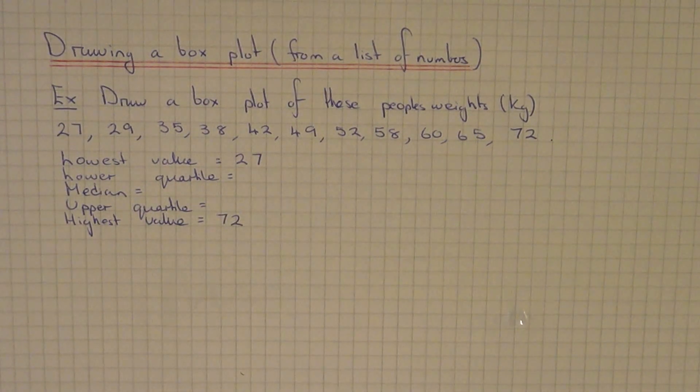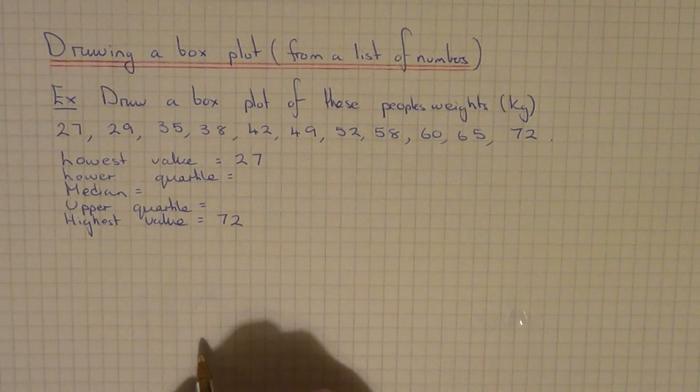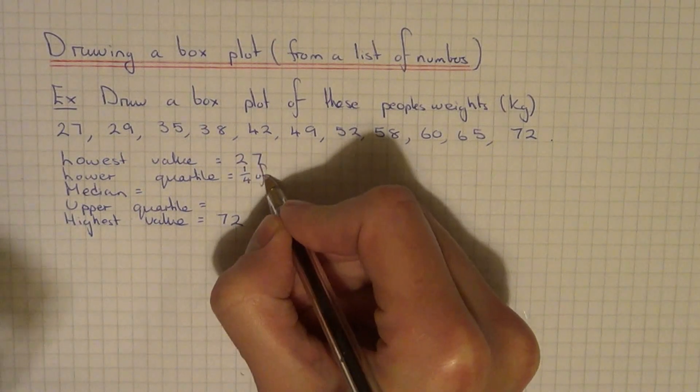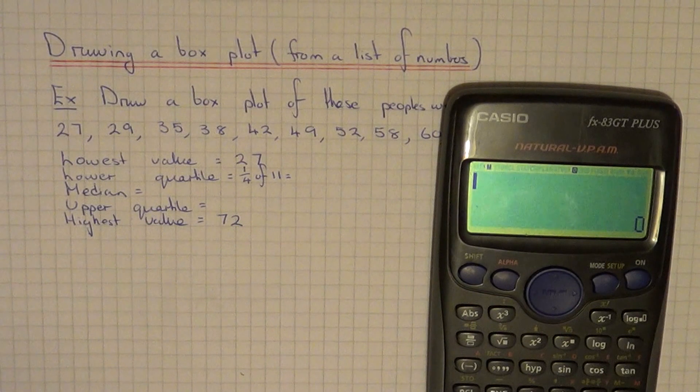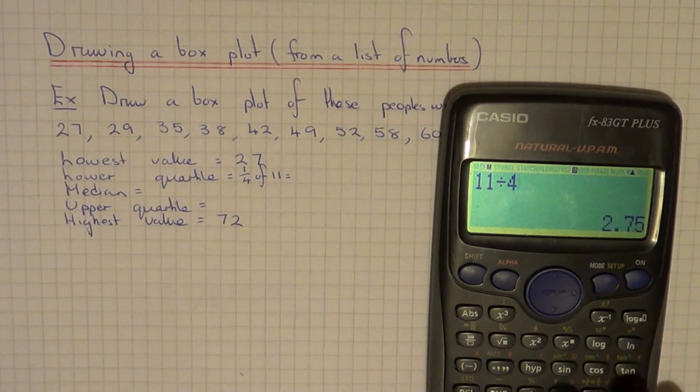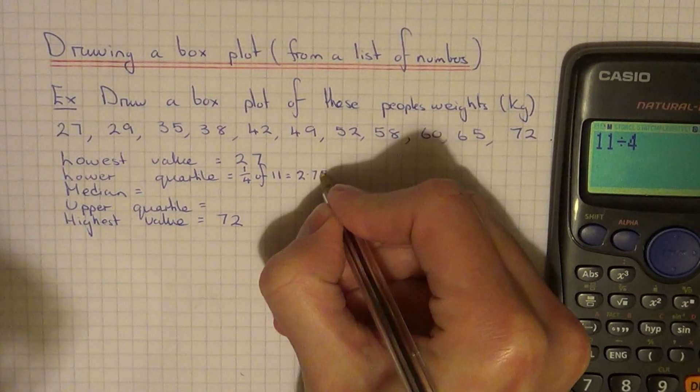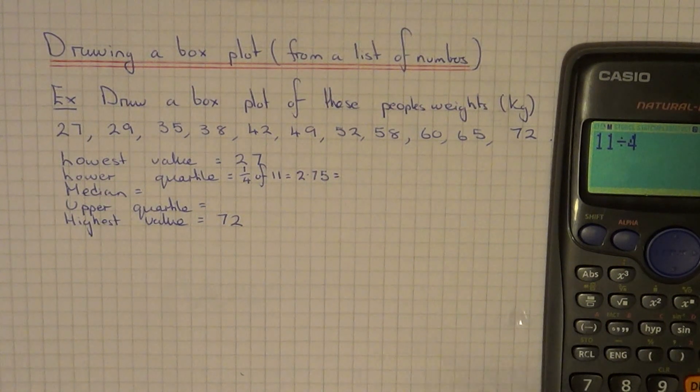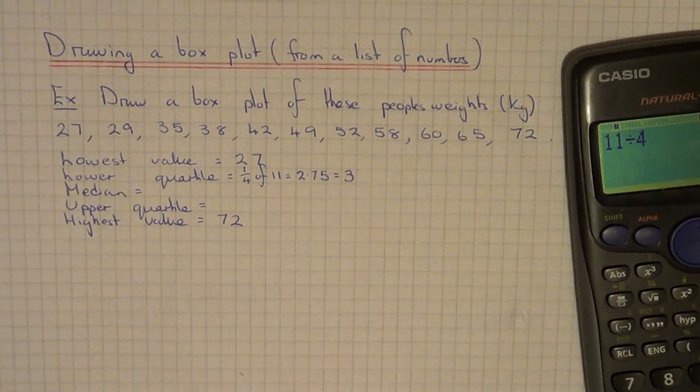Let's next do the lower quartile. The lower quartile is a quarter of the way through the data, so we need to work out a quarter of 11. If you do 11 divided by 4, this gives you 2.75. If you get a decimal, round the number upwards, so I'm going to round it up to 3.